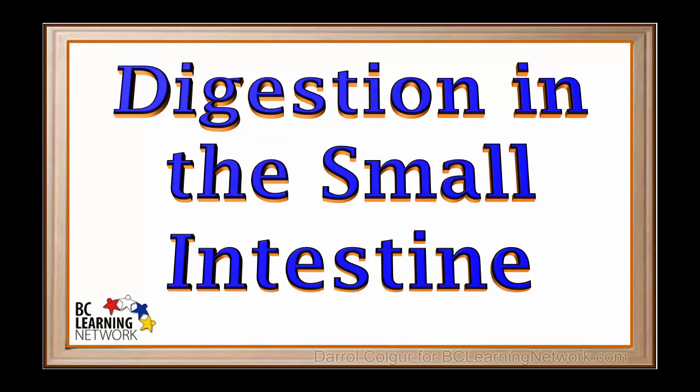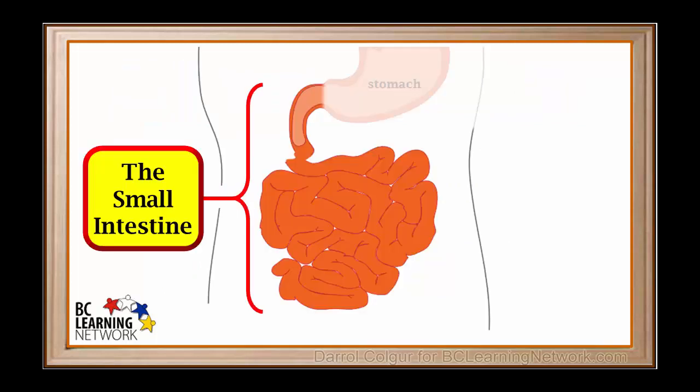Much of the digestion of food and absorption of digested food into our bloodstream occurs in the small intestine. The small intestine is where food goes after leaving the stomach. It is a long tube which is coiled up tightly in order to fit into our abdominal cavity.